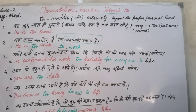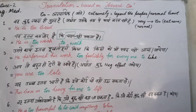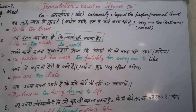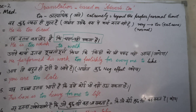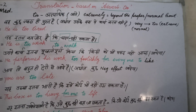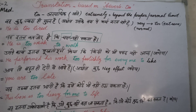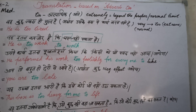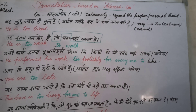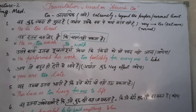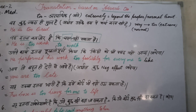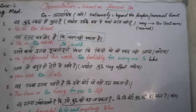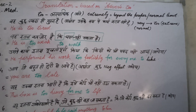First we will understand what is adverb TOO. We use TOO as an adverb when we exceed the limit of something, especially when we say something about a verb, adjective, or adverb — then this TOO acts as an adverb.